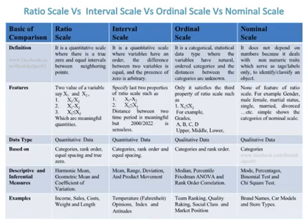Examples of nominal scale include gender (male or female), marital status (single, married, divorced), etc., simply showing the categories of nominal scale. The data type of ratio scale and interval scale are quantitative data, while the data type of ordinal scale and nominal scale are qualitative data.